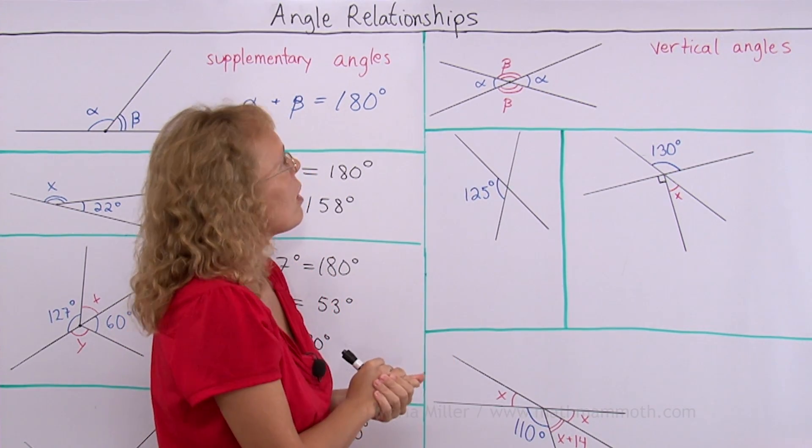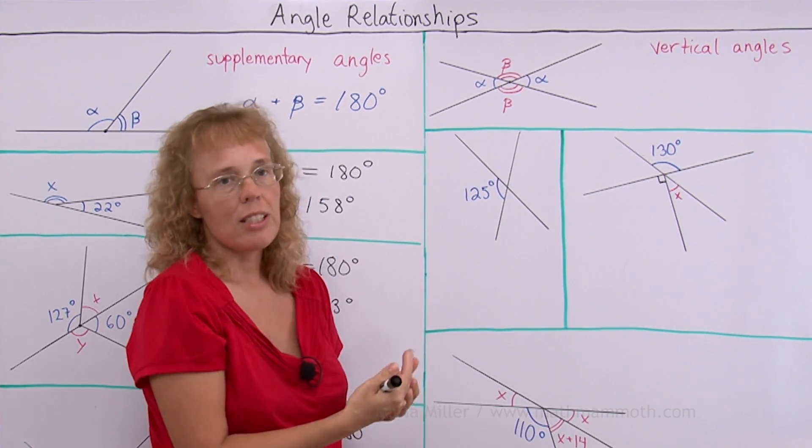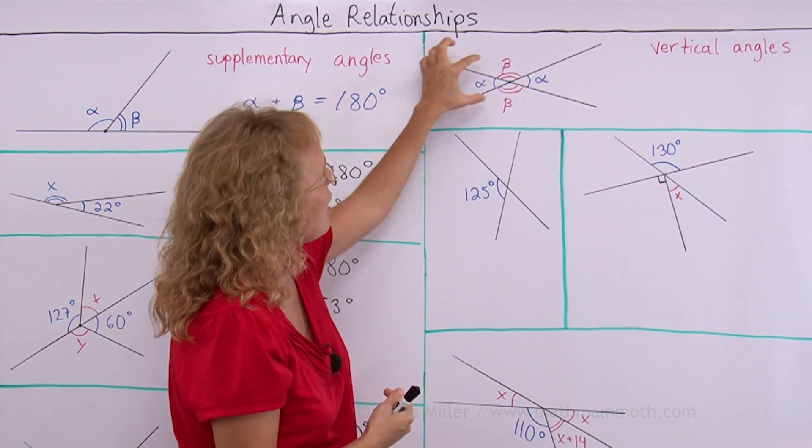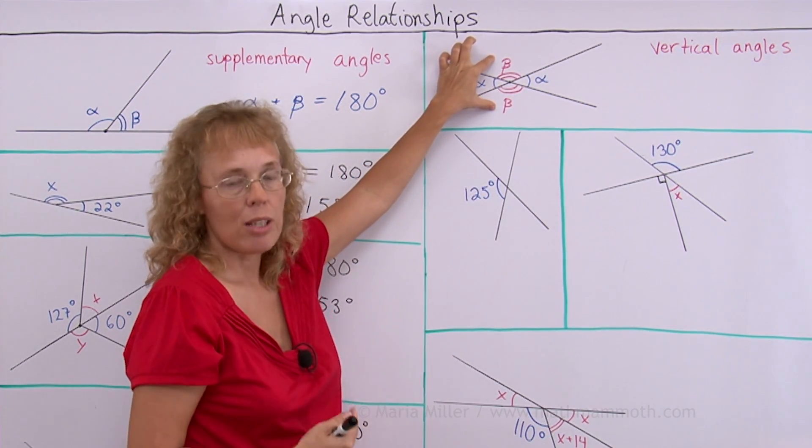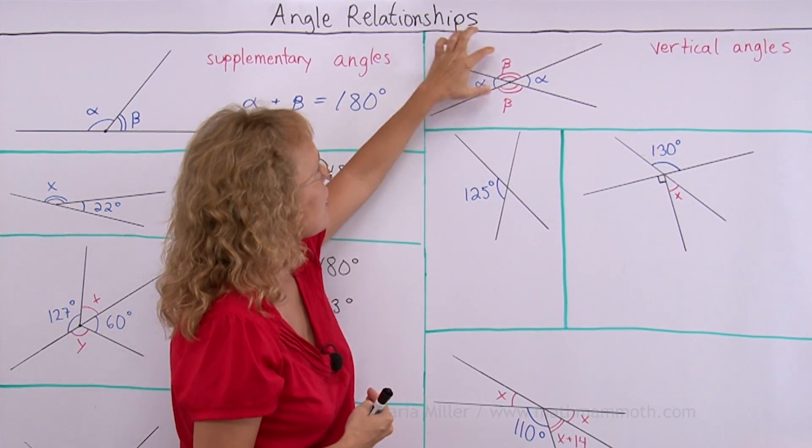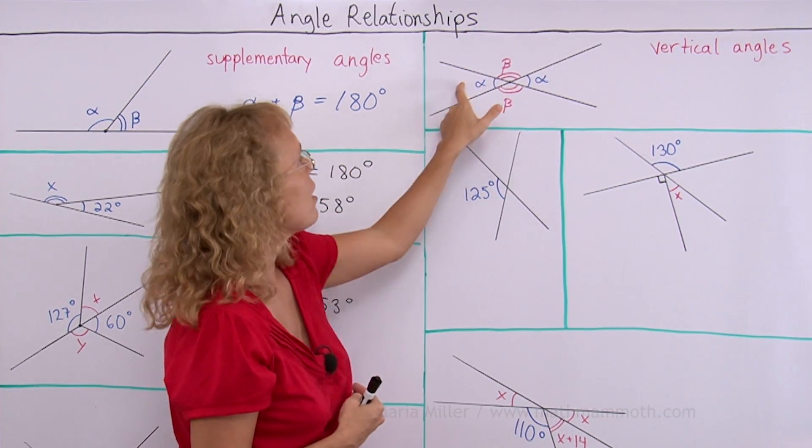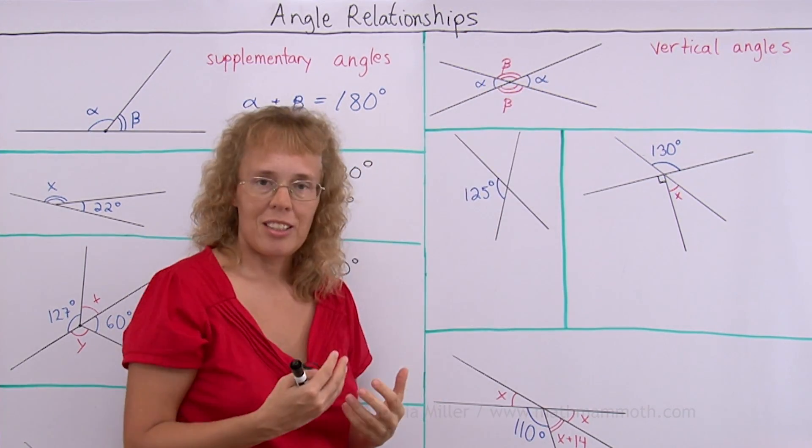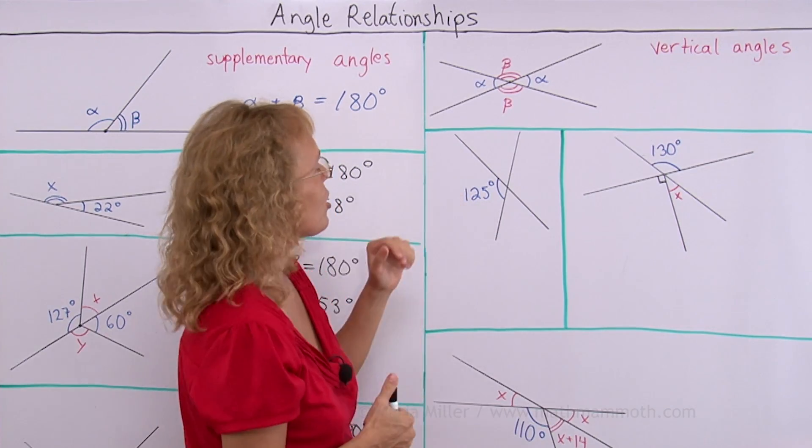For example maybe both of them are say 40 degrees here. 40 and 40 degrees. And these two angles are also equal. They are called vertical angles. So this and this angle are vertical angles and this and this angle are vertical angles. There's actually two pairs of vertical angles in this picture.